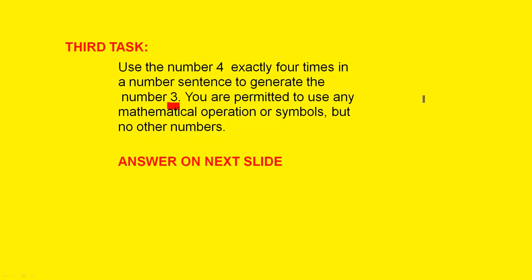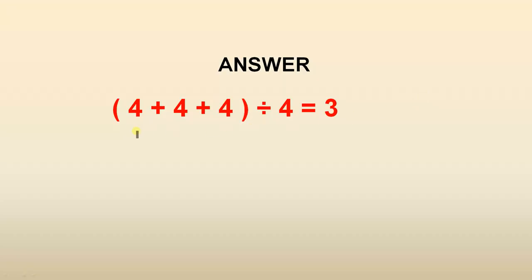Let's look at the answer. If you have 4 plus 4 plus 4 and you divide it by 4, that gives you 12 divided by 4. So you've got 12 and you divide that by 4 and it gives you the answer of 3. So we've answered the question.